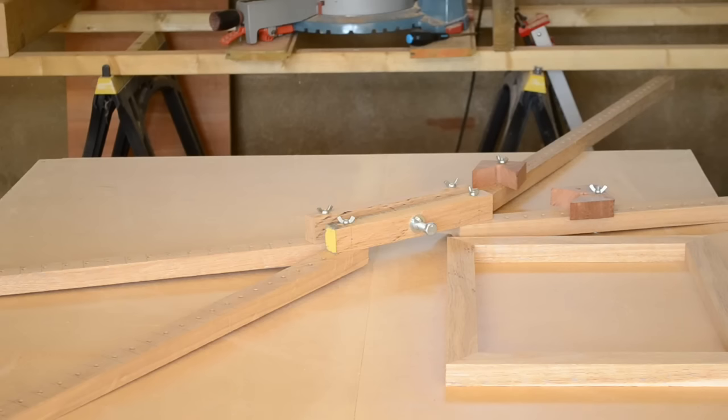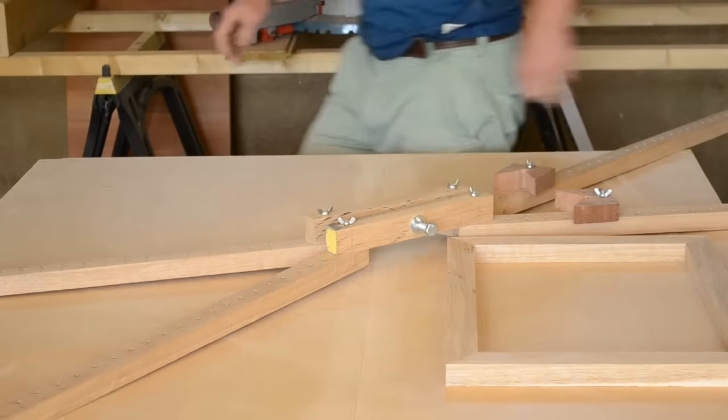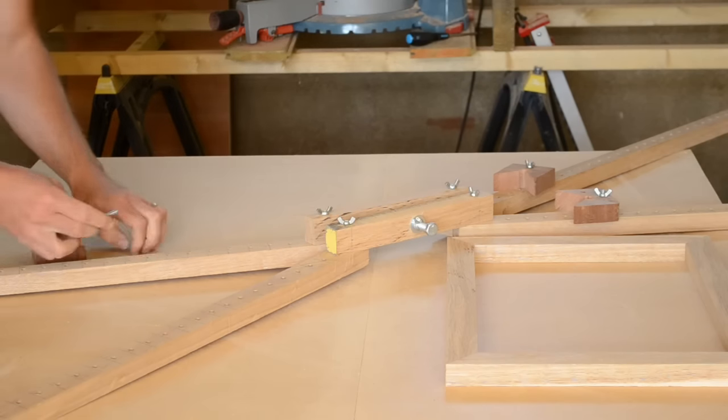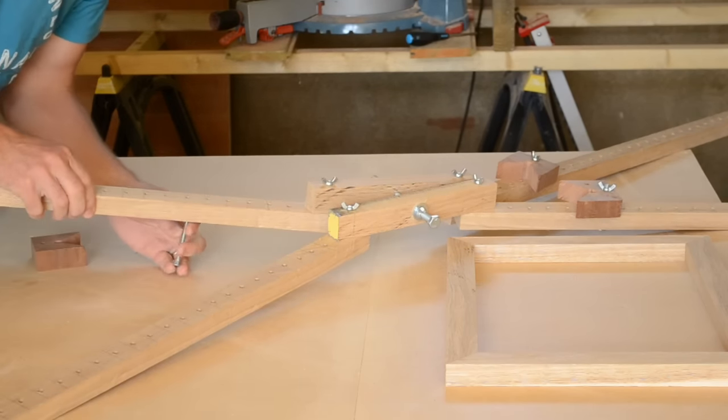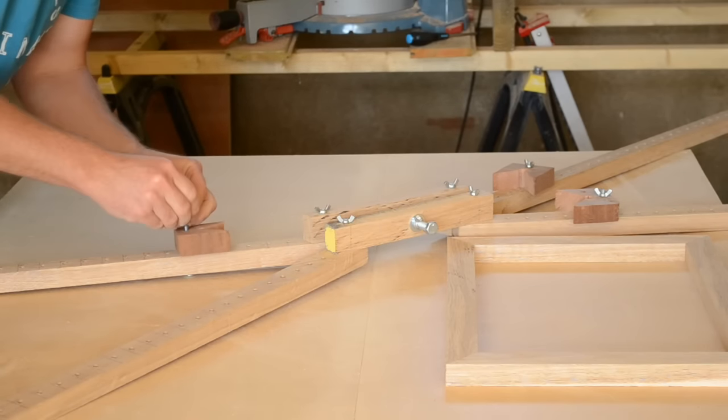Clamp for each corner, and it just swivels and adjusts. So when you put the frame together on it, put the glue on the corners, and then use this to clamp up.